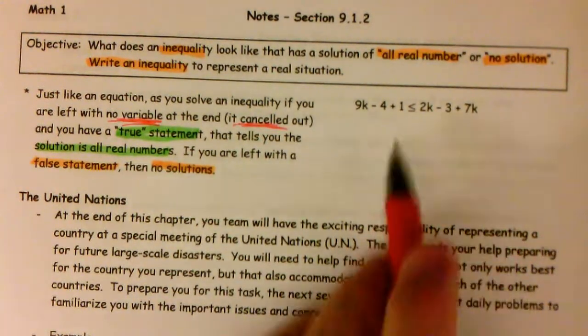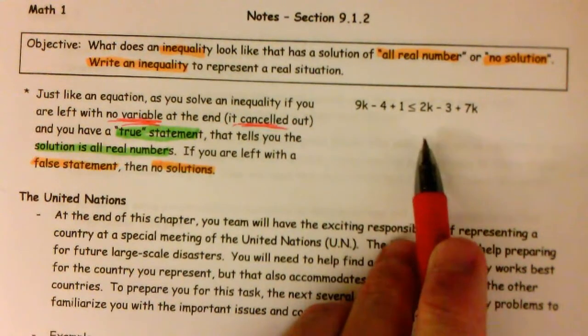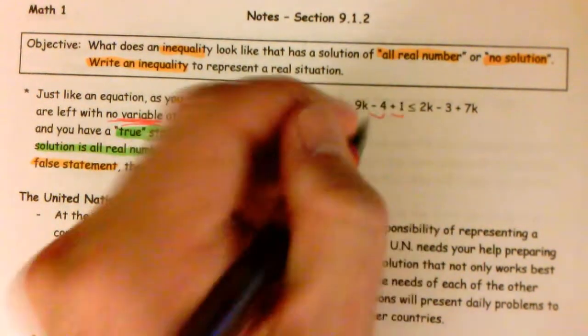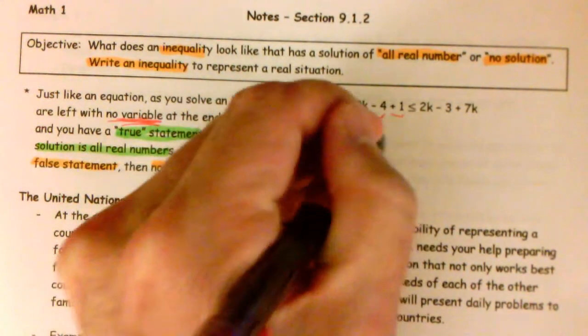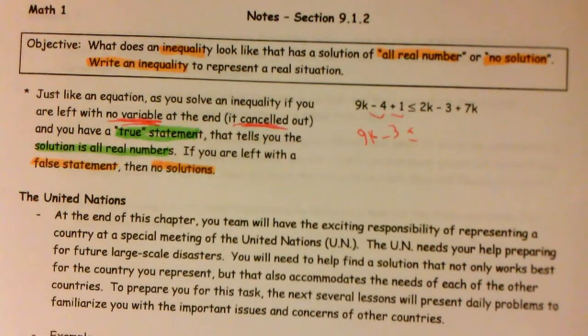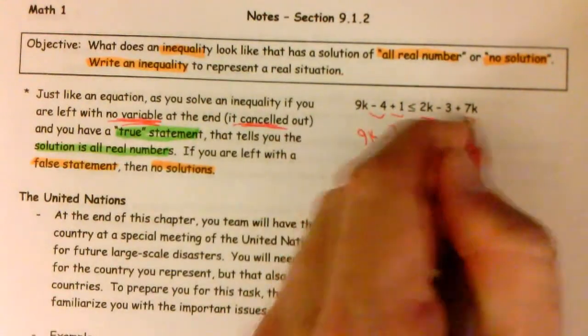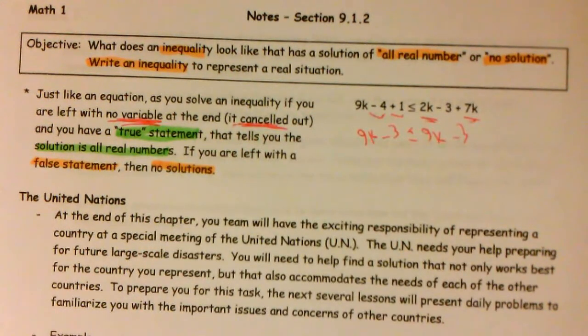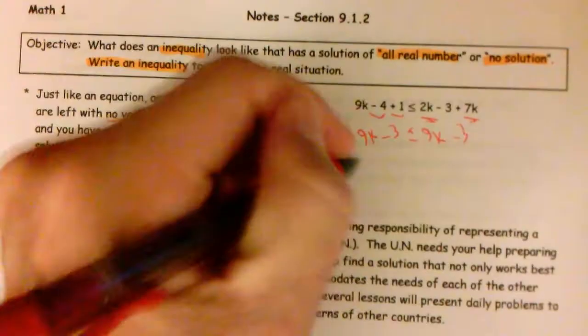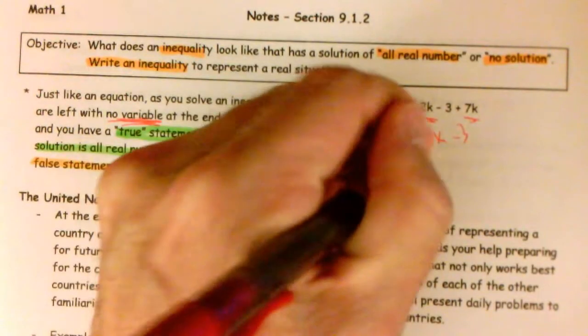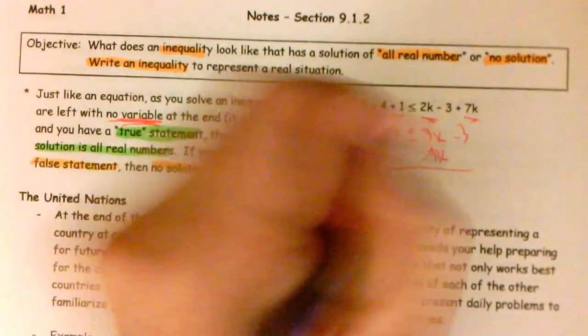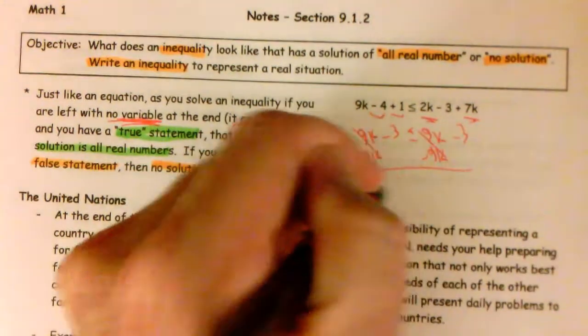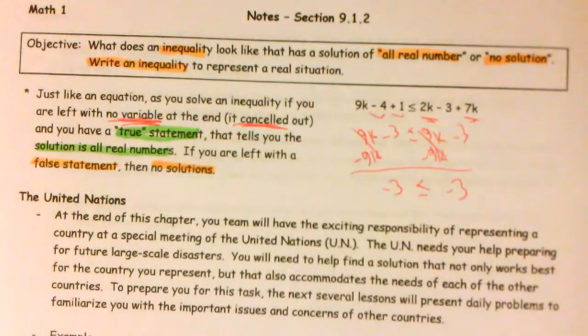So I have a quick example like that here. This will be quick and easy. If we go to solve this inequality, first we would simplify the left side by combining our like terms and we would get 9k minus 3. On the right side, we would simplify by combining our like terms and get 9k minus 3. Since there's a variable on both sides, we would go to eliminate one of them. But as we eliminate one of them, both of them get eliminated. And we are left with negative 3 is less than or equal to negative 3.